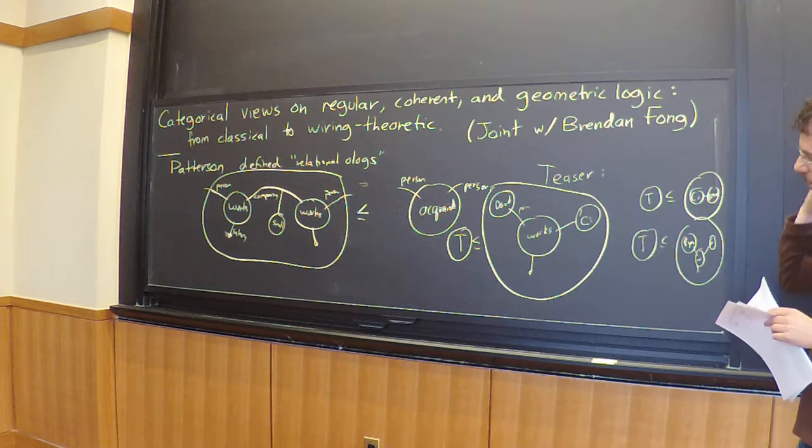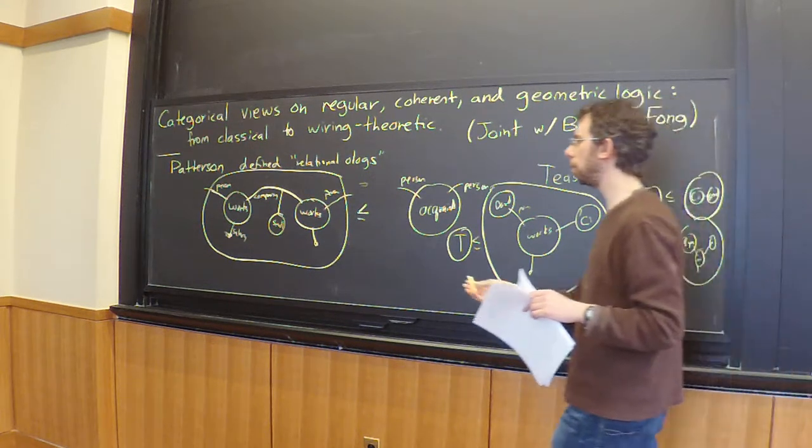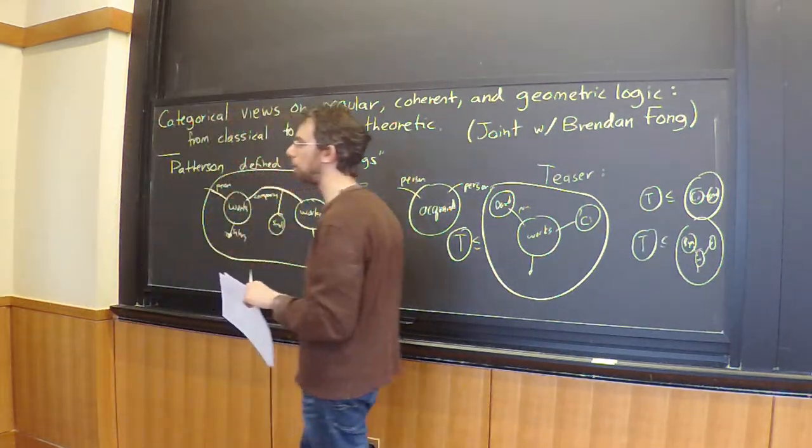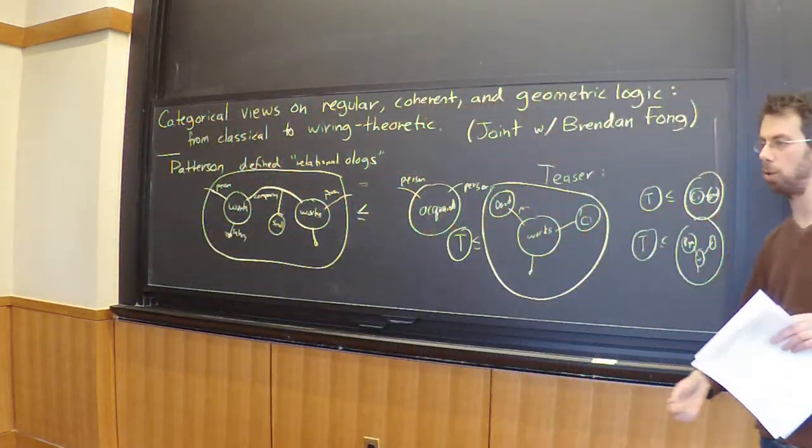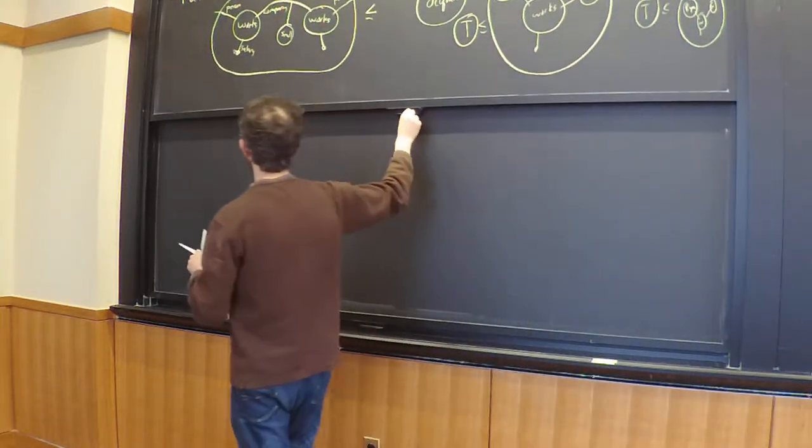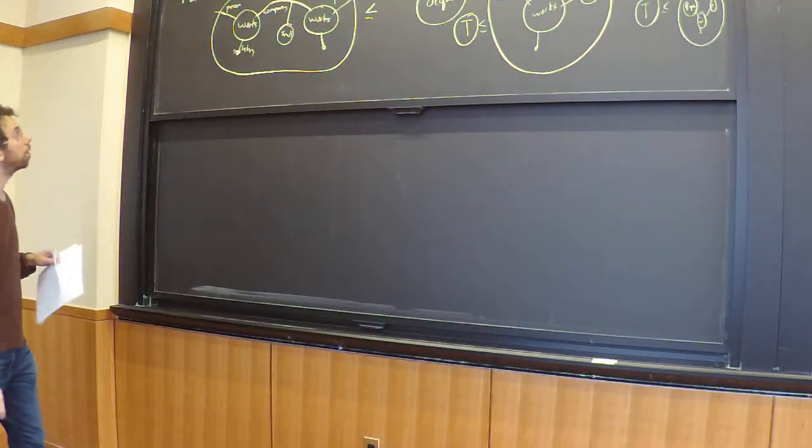David and Ryan are people, are individuals. From that, you're supposed to conclude and be able to conclude that David and Ryan are acquainted. That's the sort of thing you prove in coherent logic. So let me try to say what coherent... or... today we'll focus on regular logic.